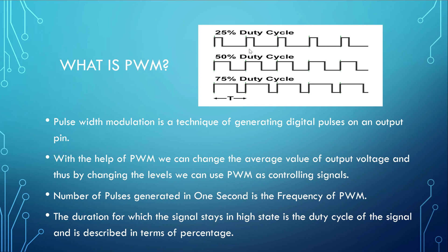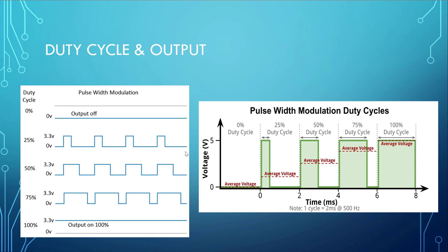Consider a one-second time window where we are generating pulses. If we give logic 1 and then logic 0 for a longer period, the overall turn-on period might be 25% — that is the duty cycle. If the turn-on period is longer, the duty cycle increases. The number of pulses generated in one second is the PWM frequency, and the duration the signal stays high is the duty cycle, expressed as a percentage — for example 25%, 50%, 75%, and 100%, where 100% equals a constant logic 1.